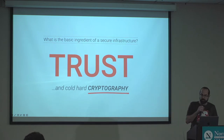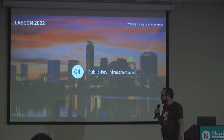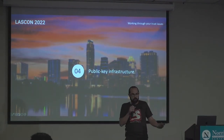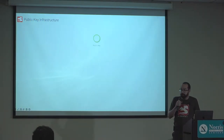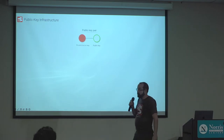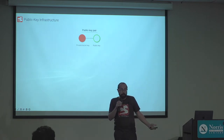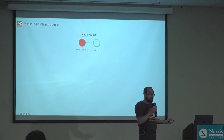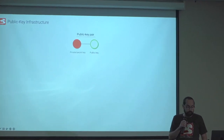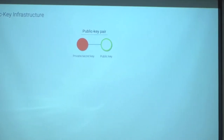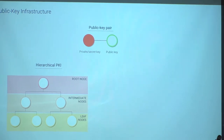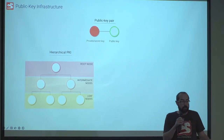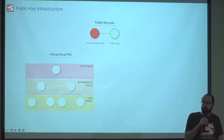Just a quick introduction to public key infrastructure so we know a little bit. It starts off with a public key, and behind every public key there is a private — sometimes referred to as a secret — key, and that forms a public key pair. We can put these into different types of structures. One is the hierarchical PKI, which is the most common one, where you have a tree-like structure with a root that is the basis of your trust.